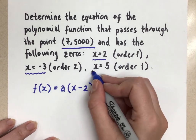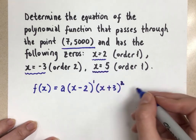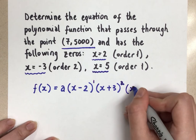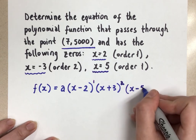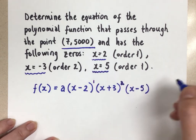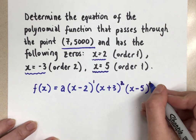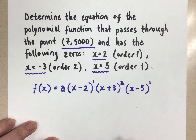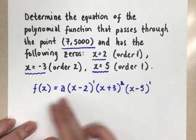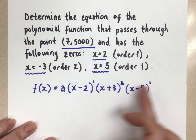And then the final x-intercept here is x equals 5. So I will put in a factor that is x minus 5, since it's a positive 5 here. And the order is 1, so the exponent is 1.